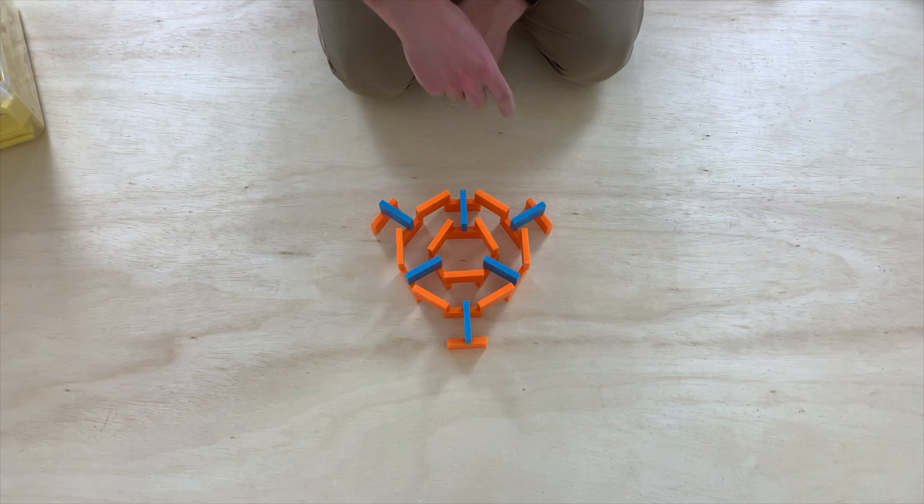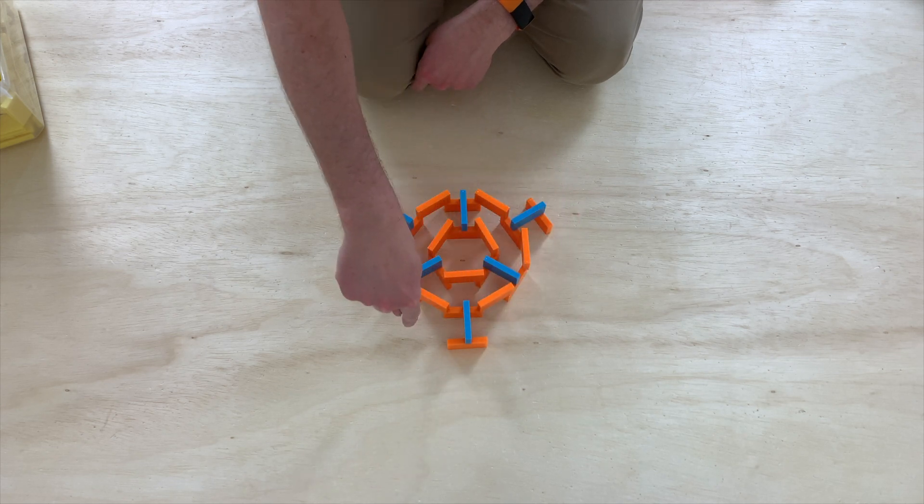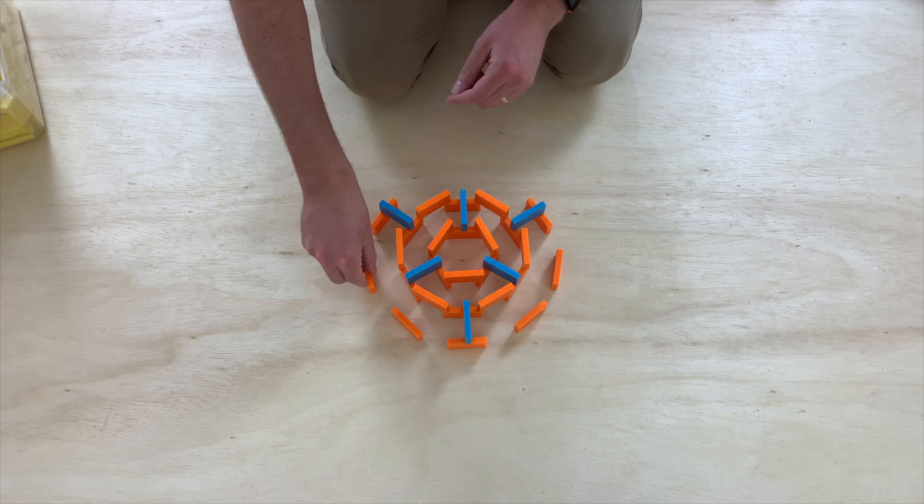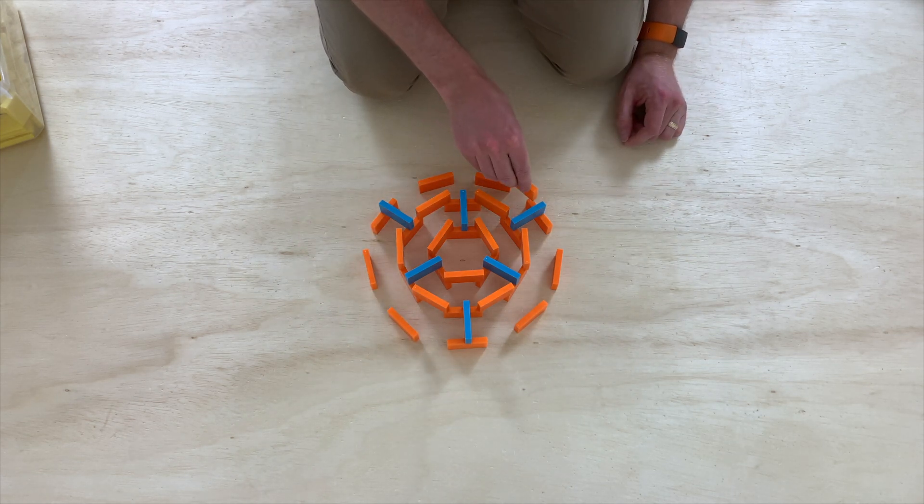Now we just need to fill in the circle. We're going to put two dominoes between all the orange dominoes that we just placed. And we'll put the second layer level on to make sure that everything's measured out correctly.